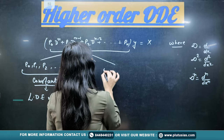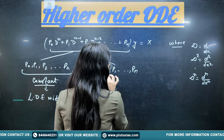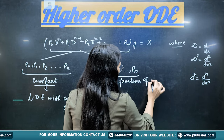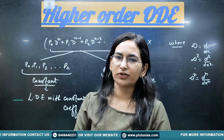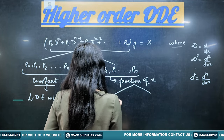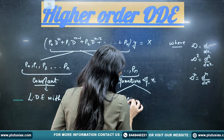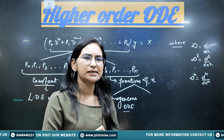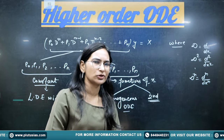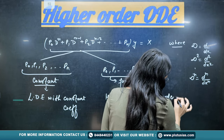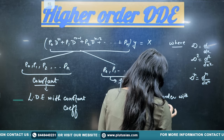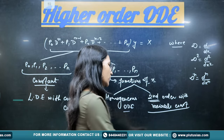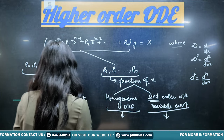If the coefficients are functions of x, then we have specific cases. One: if it is of some particular pattern, then we deal with homogeneous ordinary differential equations. And if there is no particular pattern, but it is of second order with variable coefficients, then we have a separate method for each of these cases.